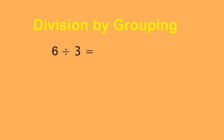Let's look at division by grouping. If we were to look at the question 6 divided by 3, this is asking us: if we were to divide 6 into 3 equal groups, how many would be in each group?